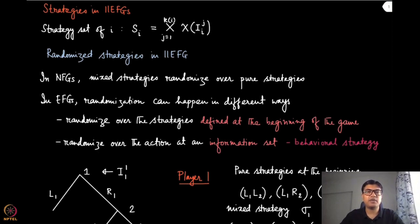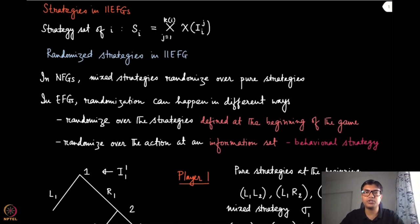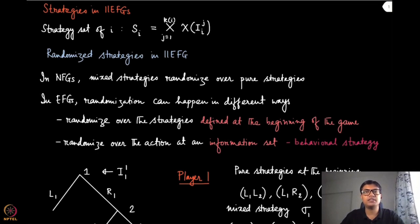In extensive form games, because they have multiple stages, you can think about randomization in two different ways. One is where you enumerate all possible pure strategies — that is the complete plan at every stage of the game — and randomize, then assign probabilities to those strategies. Or you can think about an independent probabilistic draw at every information set of this game.